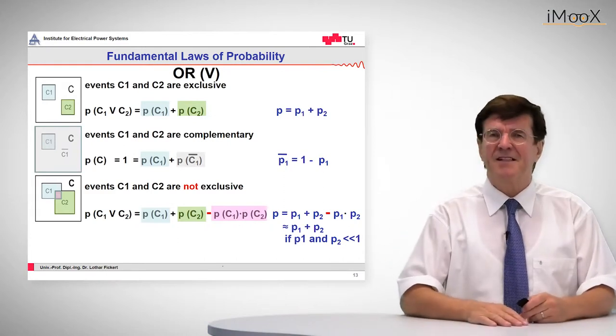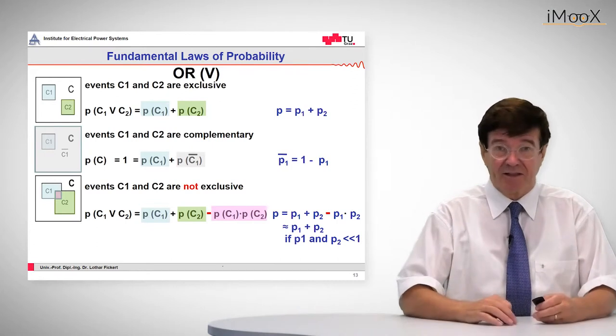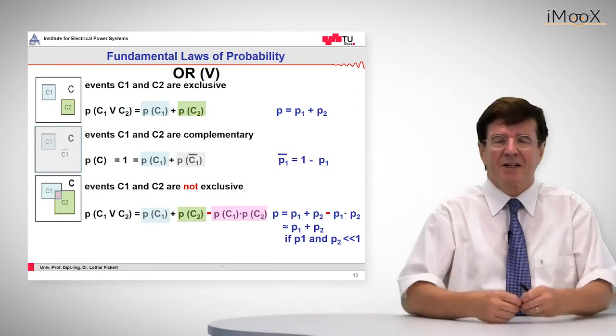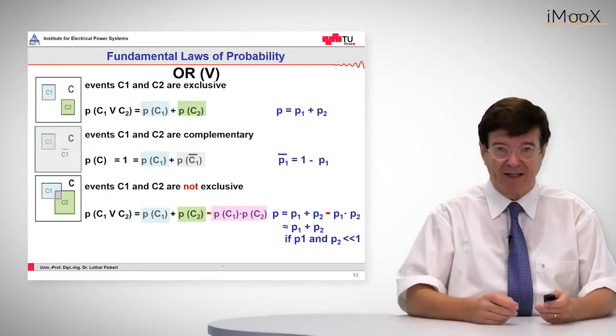In technical reality, since these probabilities of failures are so small, the product of small entities is so small that it can be neglected.